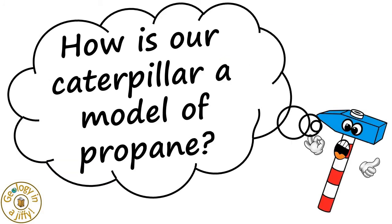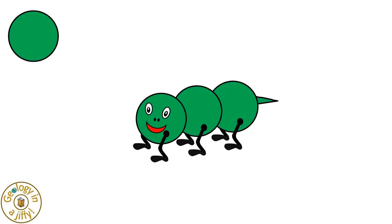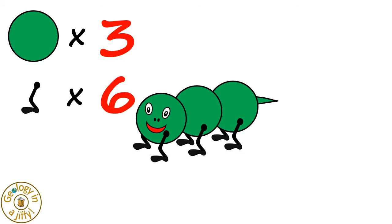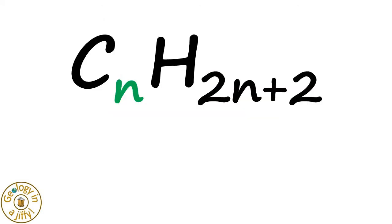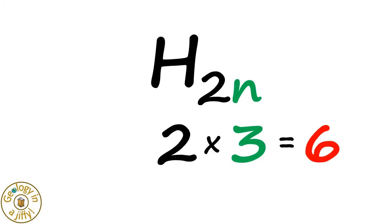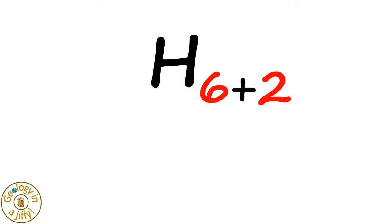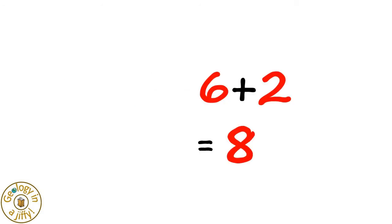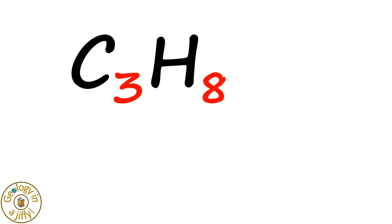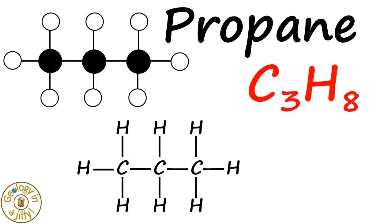How is our caterpillar a model of propane? If we count the body parts, there are three. And if we count the legs, there are six. Using the formula, n is now three, and two times three is six. And not forgetting the leg at the end and the leg at the head, the total of the legs is six add two, which makes eight. So the formula for propane is C3H8.